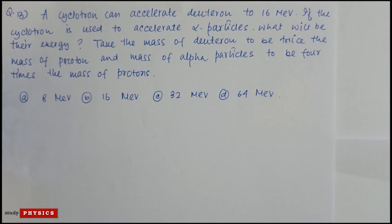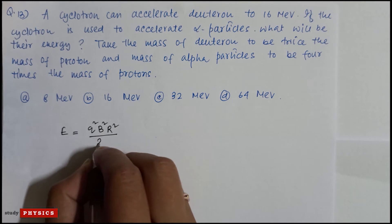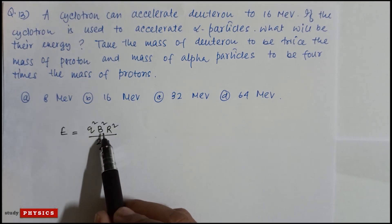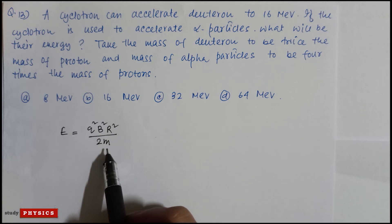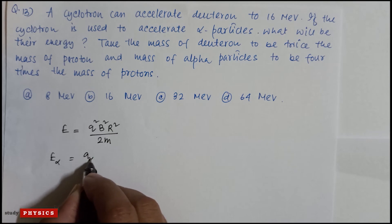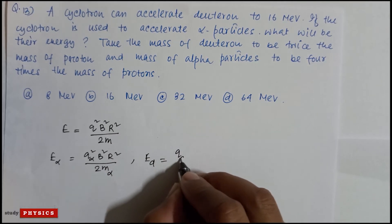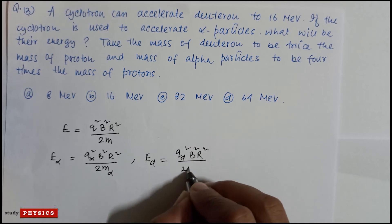Question 13: A cyclotron can accelerate a deuteron to 16 MeV. If the cyclotron is used to accelerate alpha particles, what will be their energy? Mass of deuteron is twice the mass of proton, and mass of alpha particle is four times the mass of proton. The energy formula is E equals q squared B squared R squared divided by 2m, where q is the charge, B is the magnetic field, R is the radius of the dee, and m is the particle's mass.